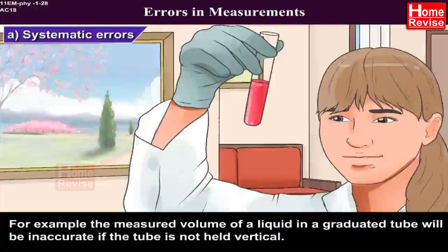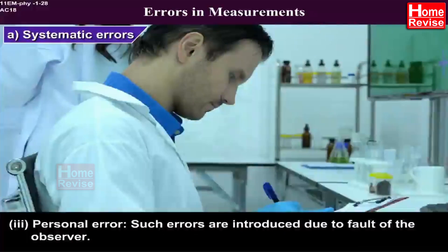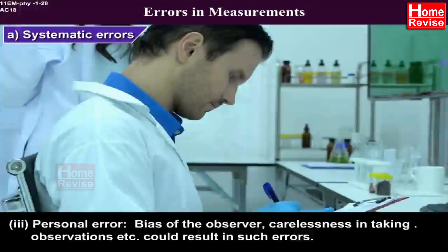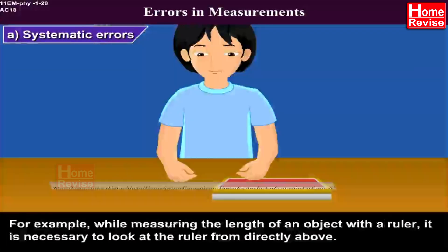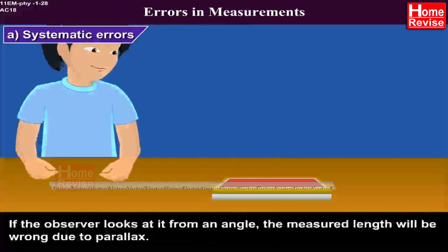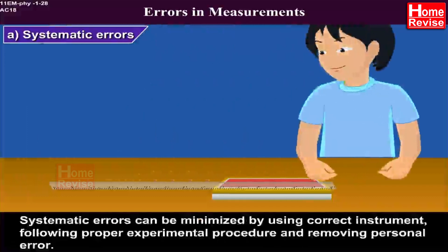Third, personal error. Such errors are introduced due to fault of the observer. Bias of the observer, carelessness in taking observations, etc. could result in such errors. For example, while measuring the length of an object with a ruler, it is necessary to look at the ruler from directly above.